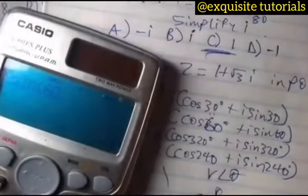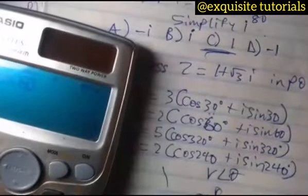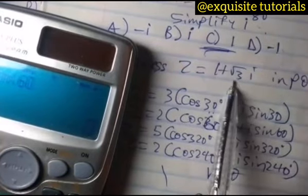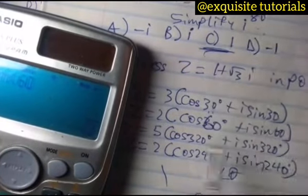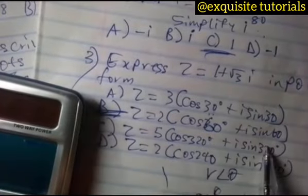But you have to understand that you have to consider the sign. If this was negative, B would have not been the answer. You would have searched for the one that will give you a negative answer.